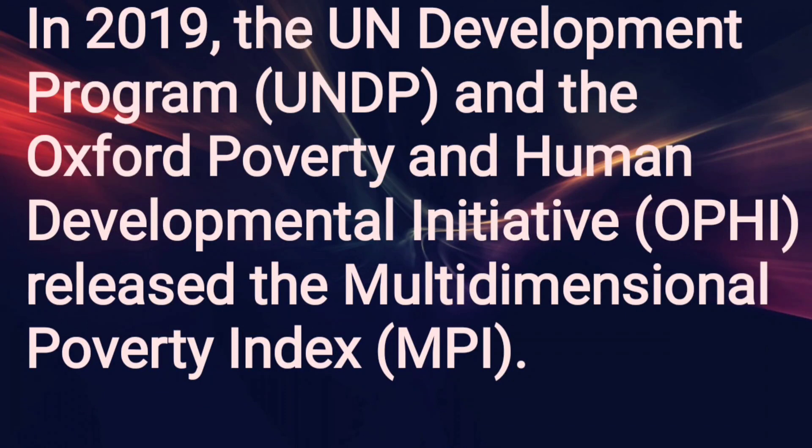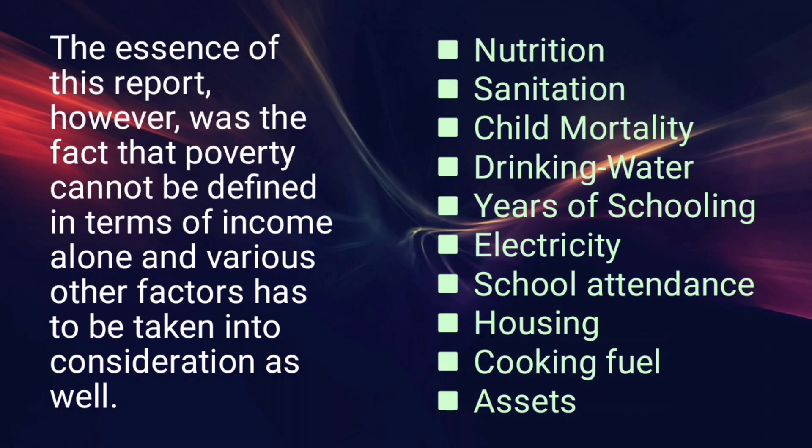In 2019, the UN Development Programme (UNDP) and the Oxford Poverty and Human Development Initiative (OPHI) released the Multidimensional Poverty Index, i.e., MPI. The essence of this report was the fact that poverty cannot be defined in terms of income alone, and various other factors have to be taken into consideration as well.